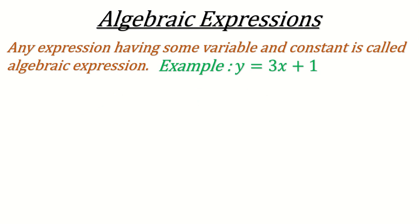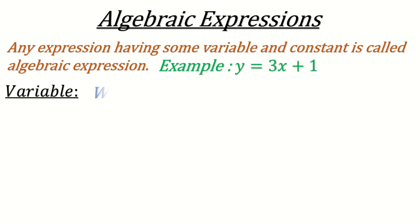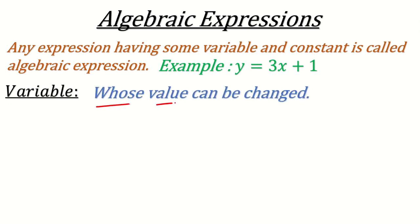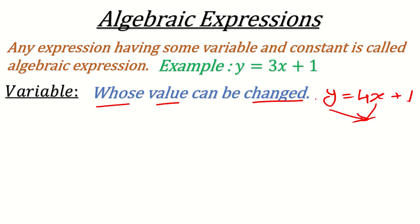Now let's talk about variables and constants in detail. The word 'variable' reminds us of 'vary,' which means to change. So a variable is any letter whose value can be changed. For example, in y = 4x + 1, both x and y are variables — x is the independent variable and y is the dependent variable.